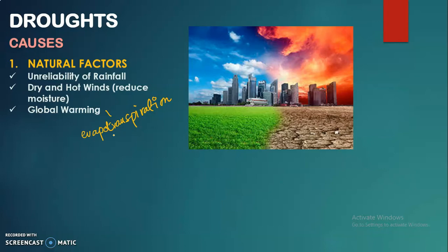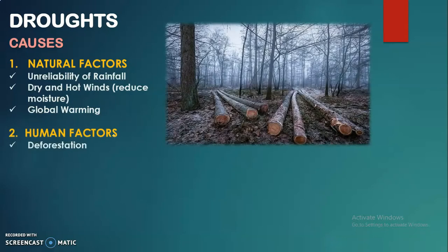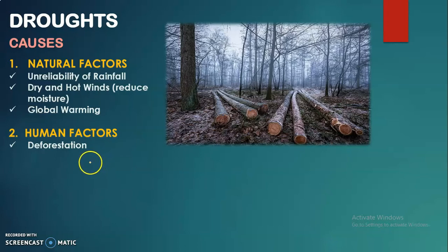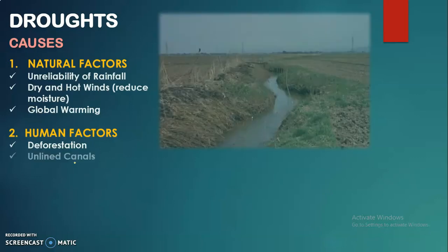Moving to human factors, number one is deforestation. Forests are the main reason behind transpiration, through which rainfall is generated. When humans cut forests and carry out deforestation, they play a part in leading towards drought-like conditions, ultimately causing low rainfall.